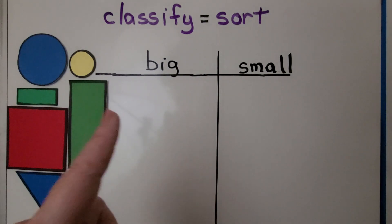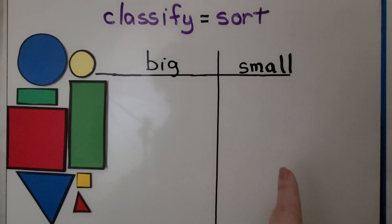Here we have a set for big and a set for small. We can sort these shapes by their size following the rule that all big shapes go on the left and all small shapes go on the right.